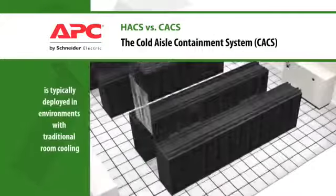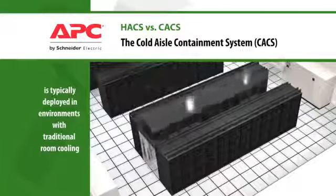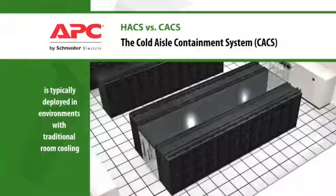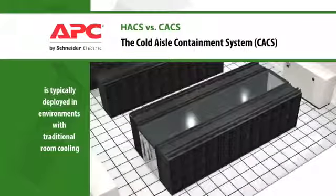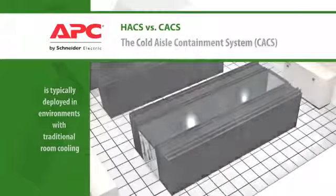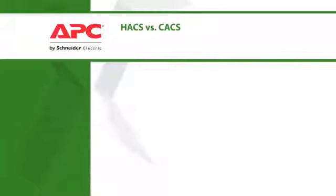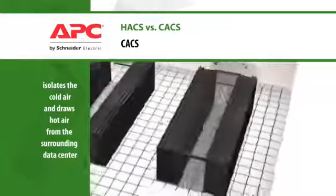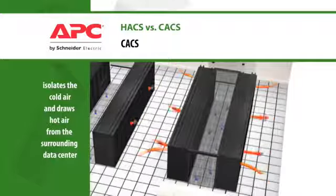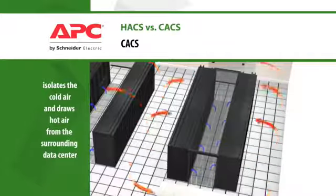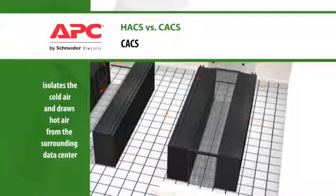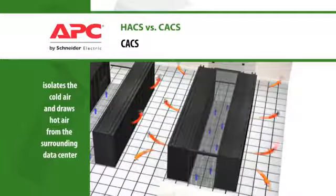Cold Aisle Containment, or CAC, is typically deployed as an improvement to environments with traditional room cooling in place. The cold aisle containment system isolates cold air in the aisle, drawing hot air from the data center space.